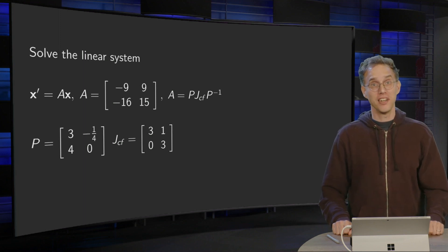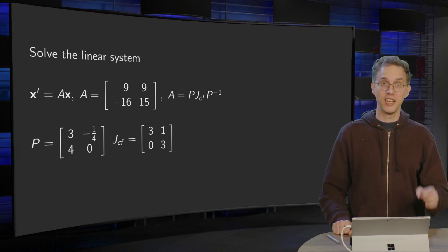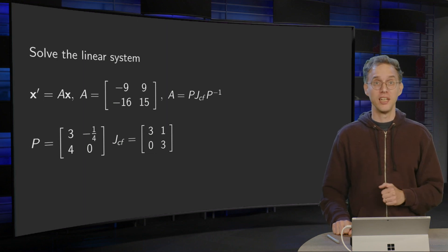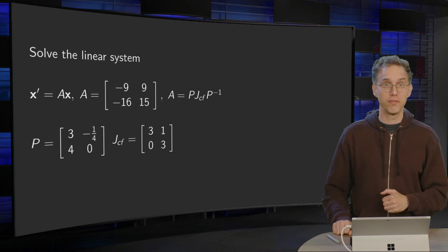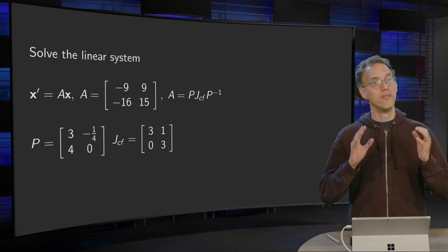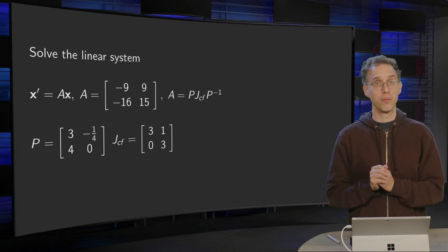We can now solve a linear system of differential equations x' equals Ax if A does not have enough independent eigenvectors. We can use the Jordan canonical form and its matrix exponential function.